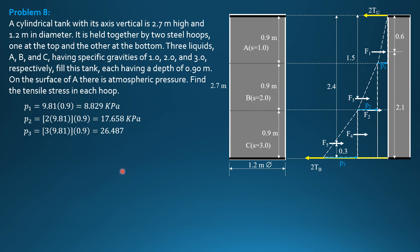So F1 is 0.5 times P1, 8.829 times height 0.9, perpendicular to the board 1.2. So F1 is equal to 4.768 kilonewtons. F2 is P1 times height 1.8 times perpendicular to the board 1.2. So 8.829 times 1.8 times 1.2, so it is equal to 19.071 kilonewtons. F3, 0.5 times P2, 17.658 times height 0.9 times 1.2, perpendicular to the board, 9.535 kilonewtons.